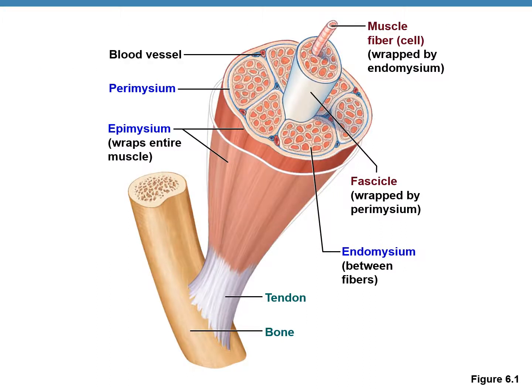The figure shows a skeletal muscle connected to a bone by the white tendon. The entire skeletal muscle has several bundles or fascicles. One fascicle has been pulled out, and from that fascicle one muscle fiber cell has also been pulled out — that single muscle fiber is wrapped by endomysium. One fascicle is wrapped by the perimysium, all fascicles together are covered by the epimysium, and around the epimysium is the fascia.